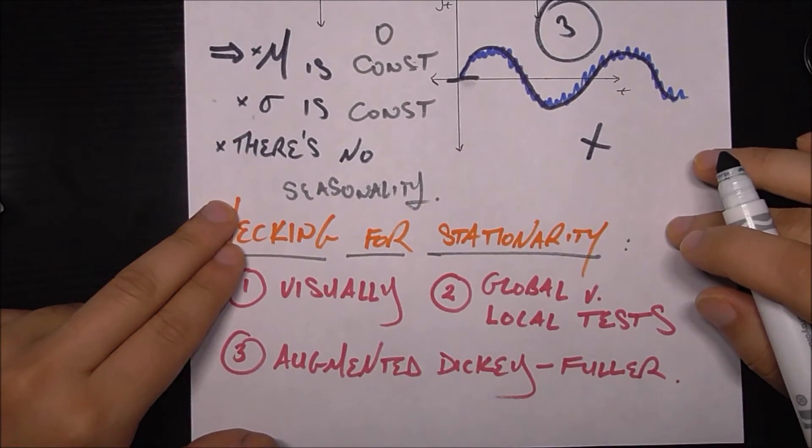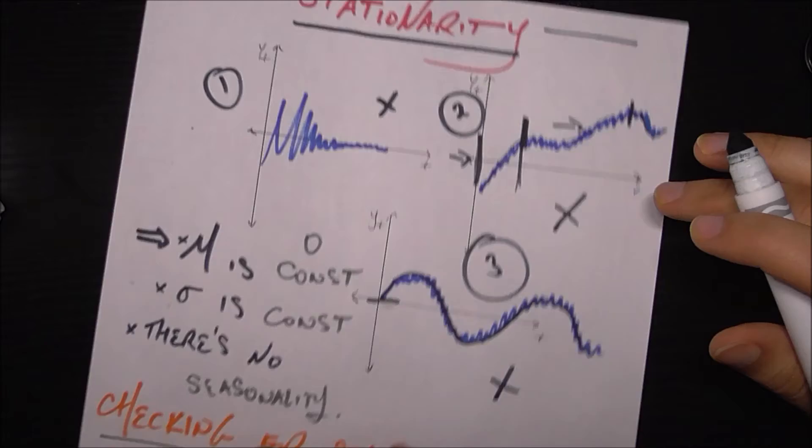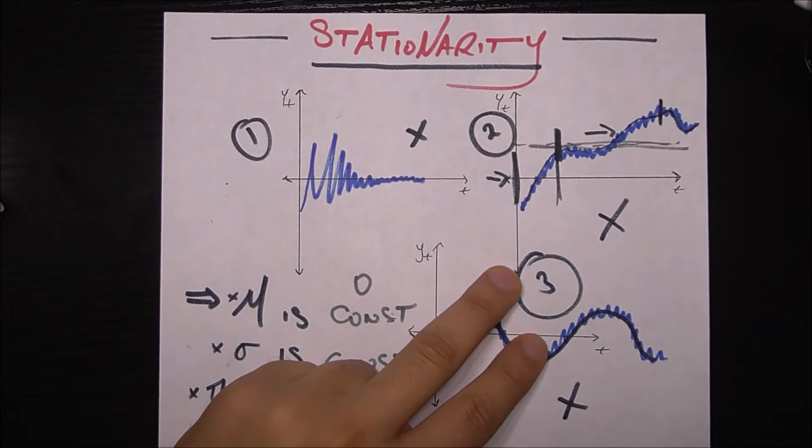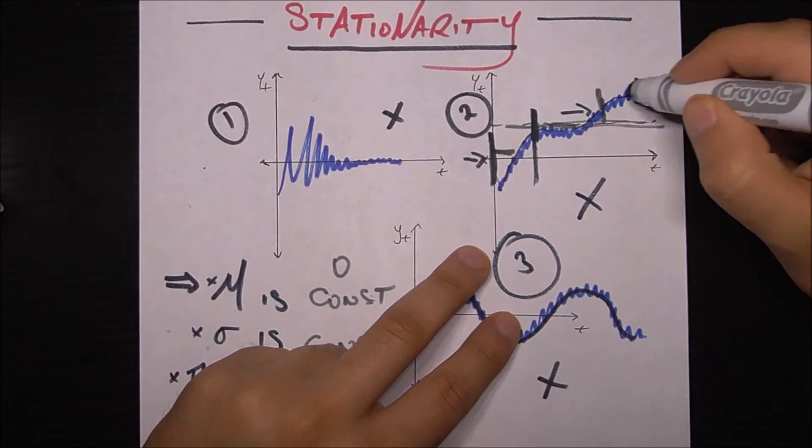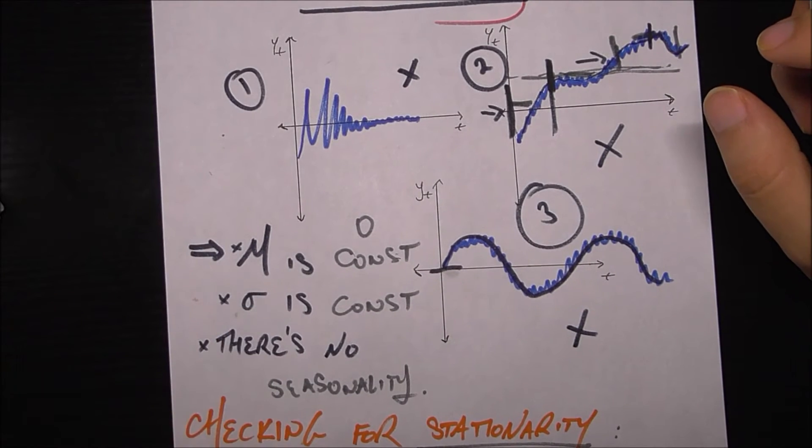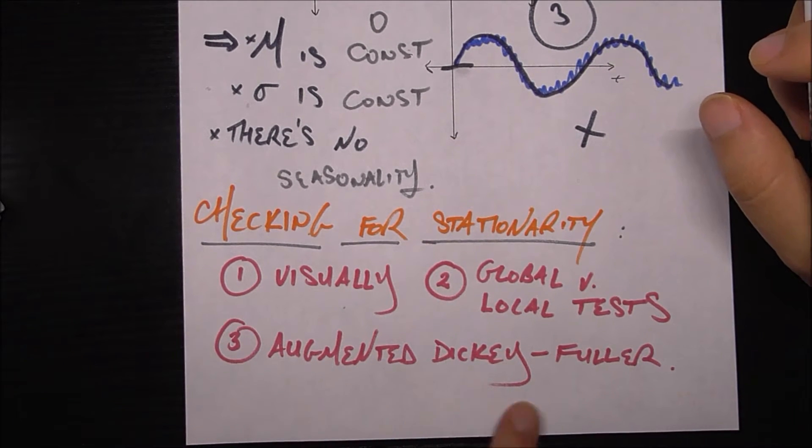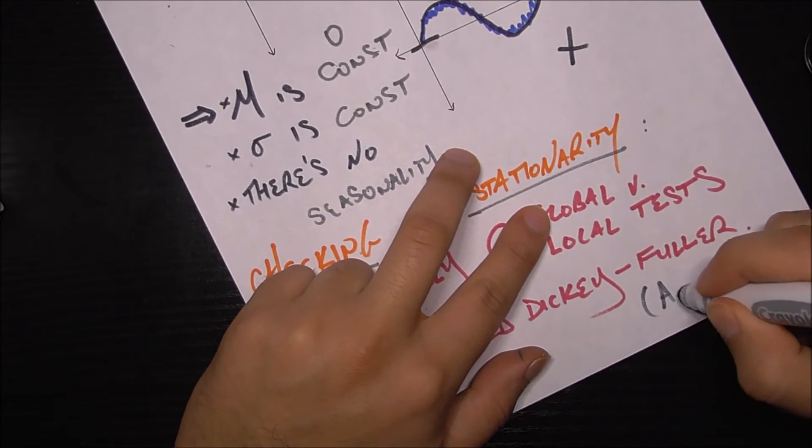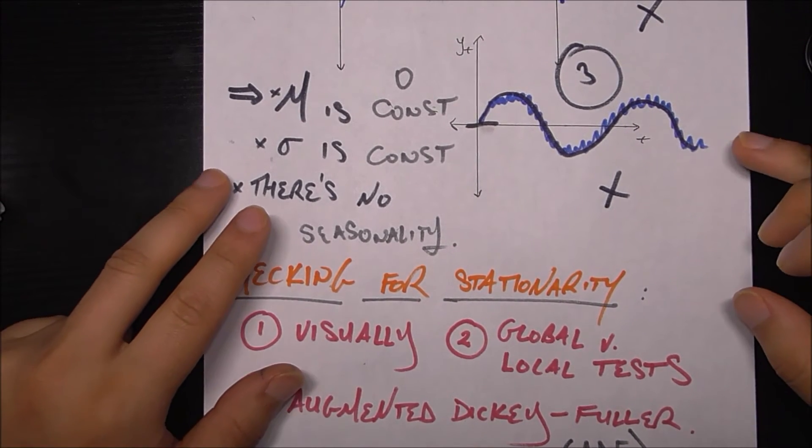Okay, so moving on, how do we check for stationarity? Of course one is visually, that's what we did in these three charts. The second one is doing global versus local tests, so that means if we took the mean of the entire series like number two, the mean looks like it would be around here, but if we did local tests which is looking at little chunks of it, the mean is not the same as the global mean and it's also not the same as other local means with different time slices. That's another way to look at it, and you can do this not just for the mean but also for the standard deviation. Of course these are still not as strong as an actual statistical test such as number three, use the augmented Dickey-Fuller test. We'll have a separate video dedicated to the ADF test, but just know that there is a statistical test you can use which outputs some number which you can interpret to tell whether or not something is likely stationary.